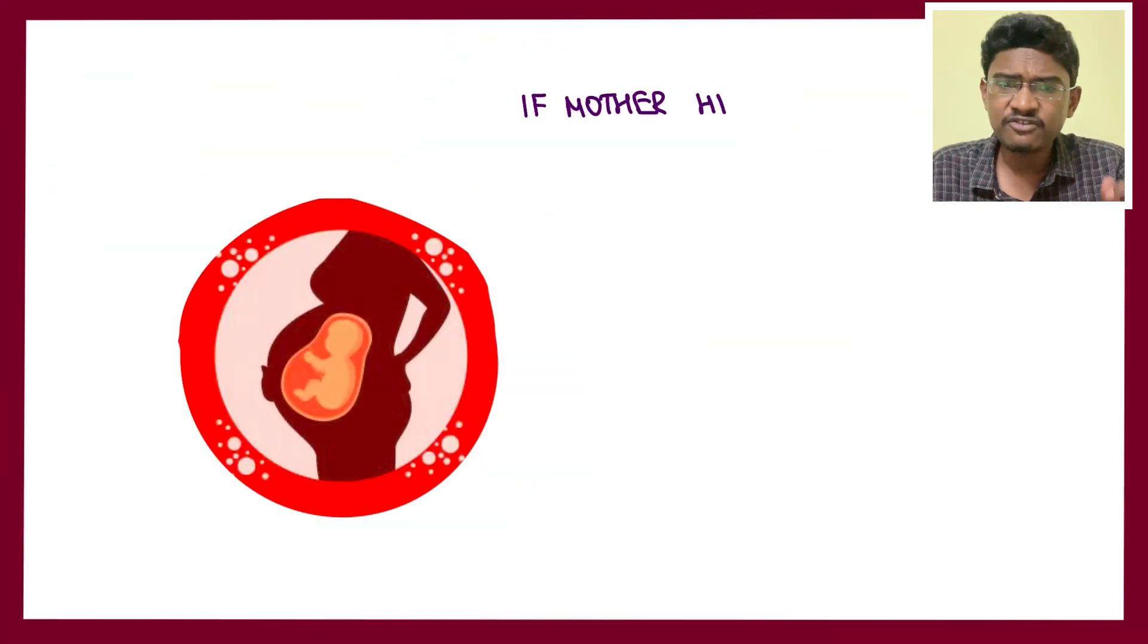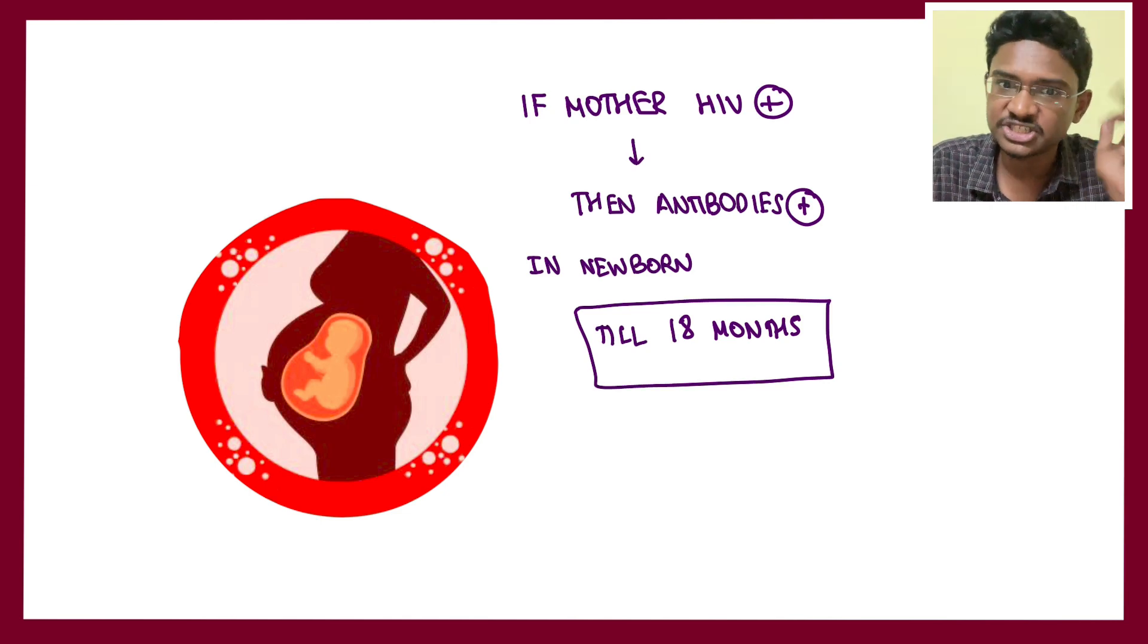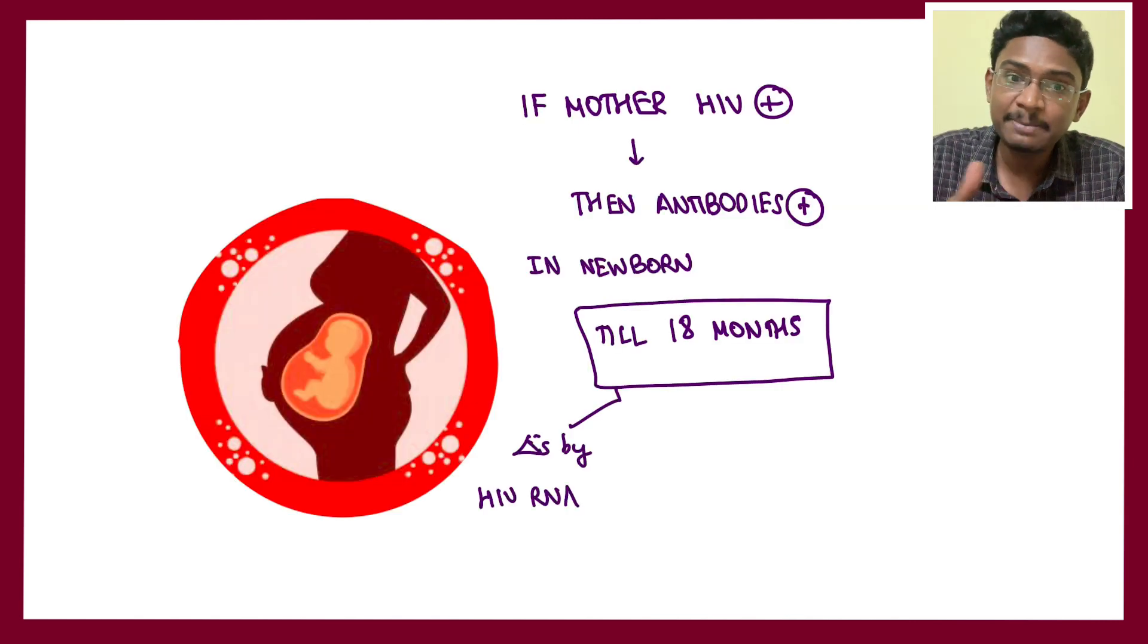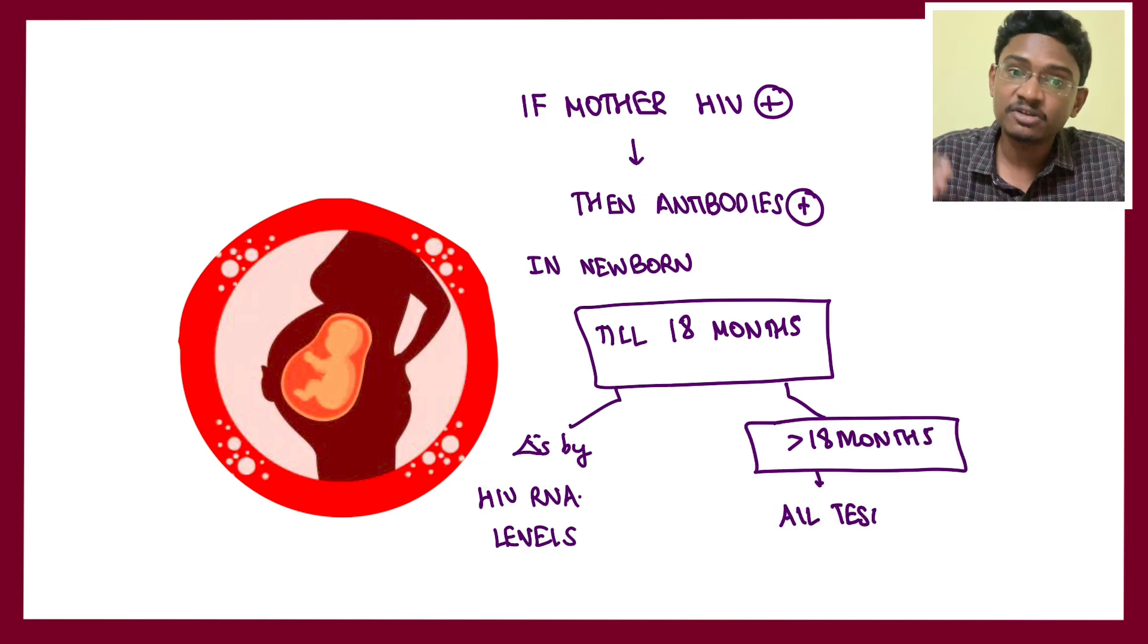If a mother is HIV positive and gives birth to a child, what test should you do for the child? Can we do ELISA? ELISA detects antibody levels as well as p24, but the antibodies might be formed in the mother, and these antibodies being IgG type might be transferred from the mother to the fetus.